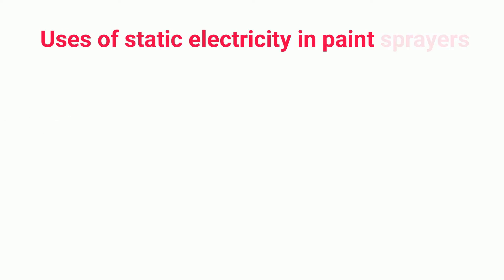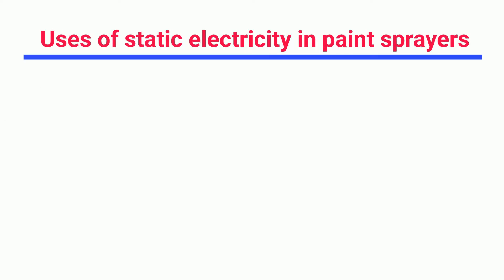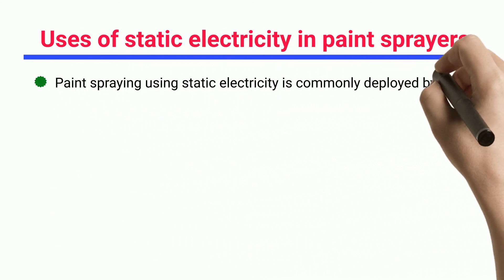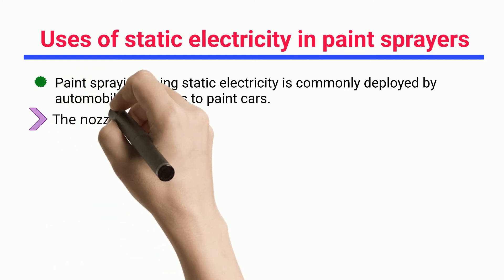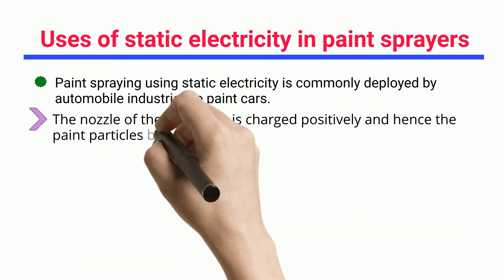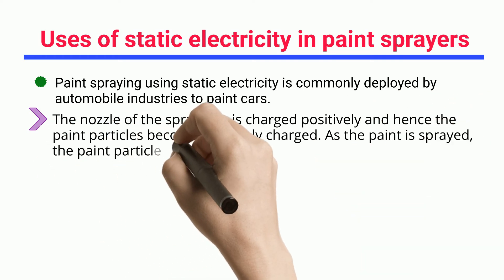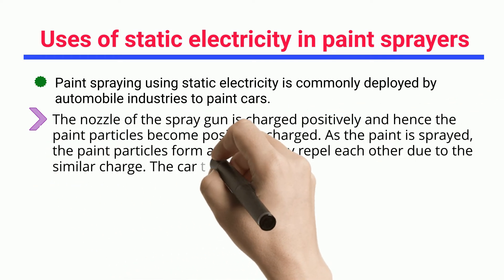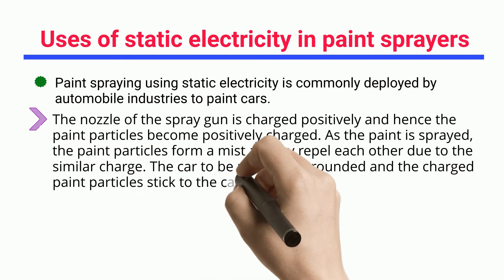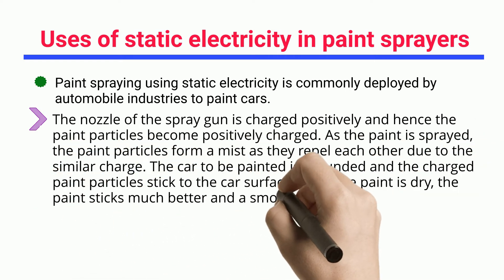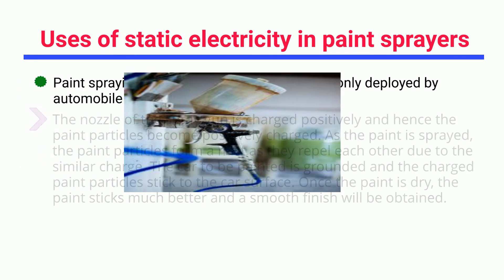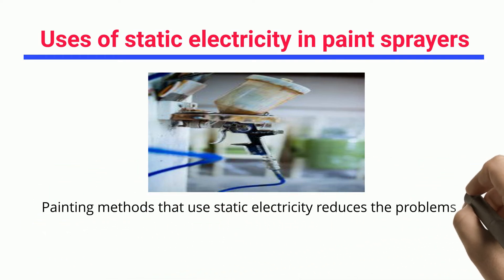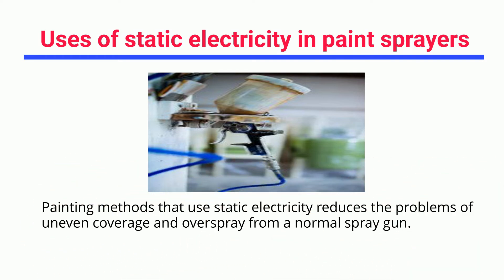Paint spraying using static electricity is commonly deployed by automobile industries to paint cars. The nozzle of the spray gun is charged positively, making the paint particles positively charged. As the paint is sprayed, the particles form a mist as they repel each other. The car to be painted is grounded, and the charged paint particles stick to the car surface, providing a smooth finish. This method reduces uneven coverage and overspray.